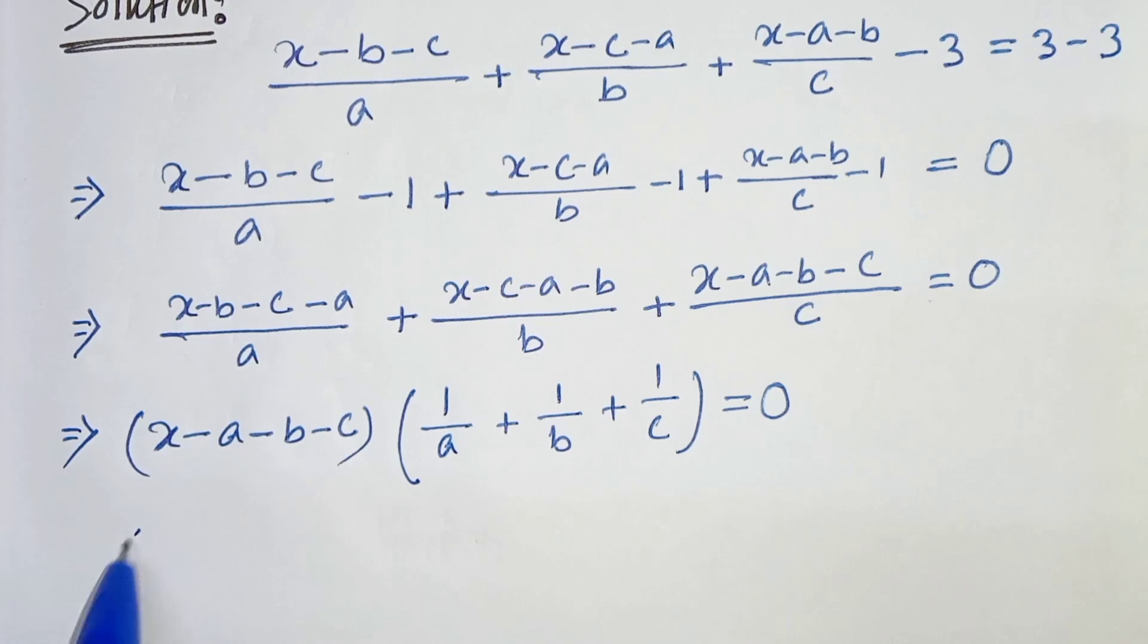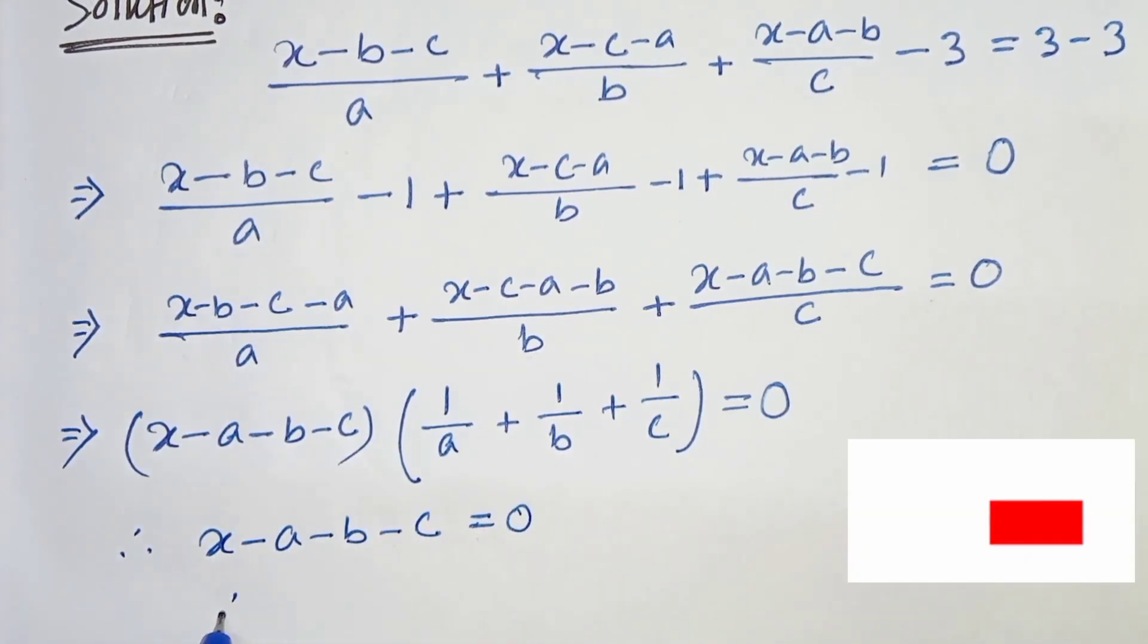Now we can say that this or this term must be 0. So from this we can write therefore x minus a minus b minus c equals to 0. Therefore x equals to a plus b plus c.